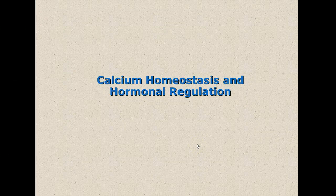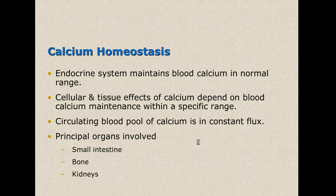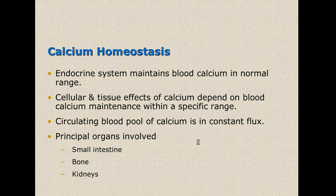Welcome to our section on calcium homeostasis and hormonal regulation. The endocrine system maintains blood calcium in a normal range, and cellular and tissue effects of calcium depend on blood calcium maintenance within a specific range. We always have a circulating blood pool of calcium that is in constant flux, and there are several organs involved in this process: the small intestine, the bone, and the kidneys.